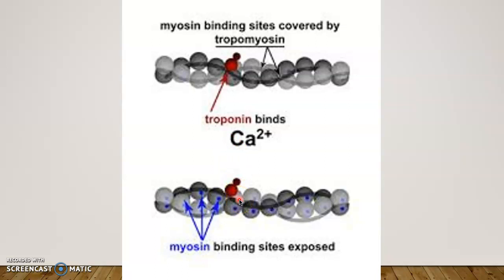This happens whenever a motor neuron sends an impulse to the muscle for it to contract. Inside the muscle cell you have sarcoplasmic reticulum, which has a lot of calcium pumped into it. When the impulse arrives, it releases that calcium, and the calcium finds troponin, binds to it, and moves it out of the way so that the muscle can contract and shorten.